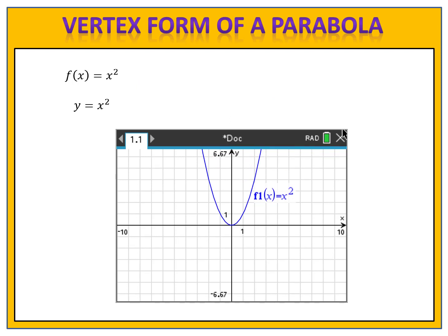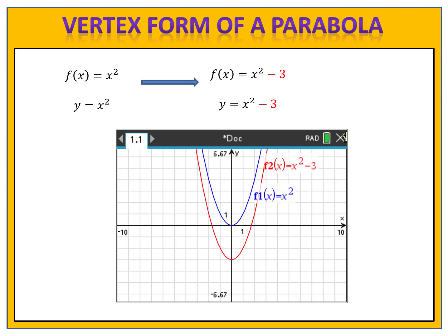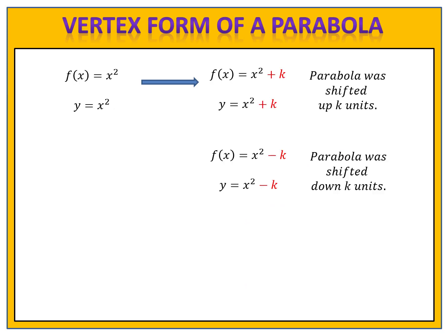Now what if we transform it in a slightly different way? What if instead of adding a number, we subtract a number — f of x equals x squared minus 1? If you predicted that the graph would move down one unit, you are absolutely correct. What if we look at f of x equals x squared minus 3? The graph moves down three spaces. And what if we have f of x equals x squared minus 6? If you said the graph would shift down six units, you are absolutely correct. In summary: if we add k, our parabola shifts up k units; and if we subtract k, the parabola will shift down k units.